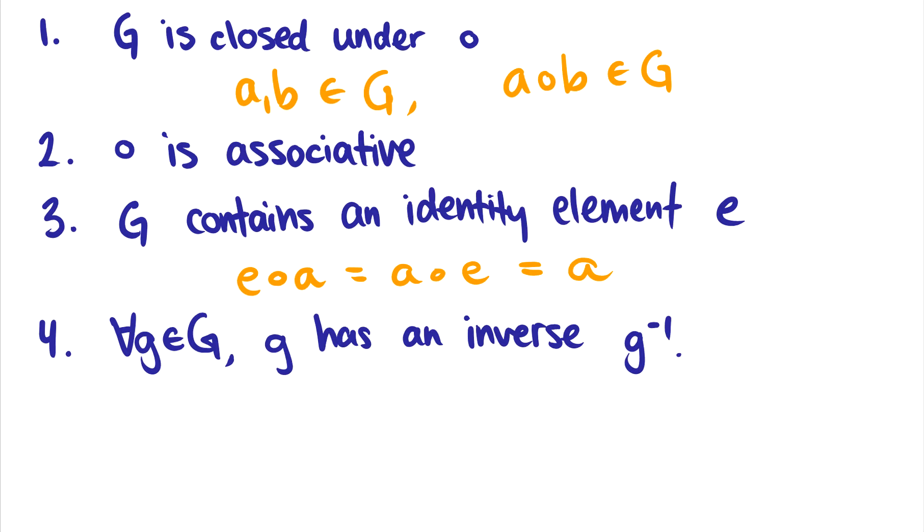And for every element in our group, there better be an inverse. So we better have that g○g⁻¹ is equal to g⁻¹○g, and this just gives us the identity element back. Of course, if there's no identity element, we can't have inverses. So we'll talk about what those are called in the next video.